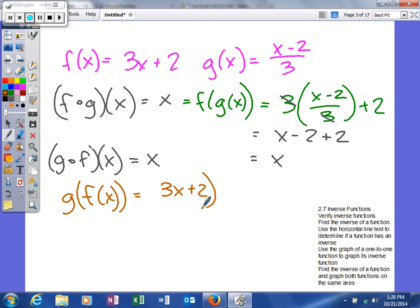We can distribute the coefficient, which gives us (3x + 2 - 2)/3, which gives us 3x/3, which equals x. Because both of these are equal to x, that proves our two functions are inverses of each other.